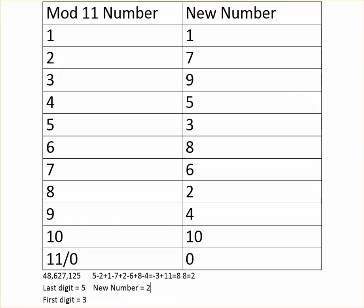The answer format is 3X5, so the formula becomes: 3 − x + 5 = 2, which gives 8 − x = 2, then −x = −6, so x = 6. That means the cube root of the number is 365.